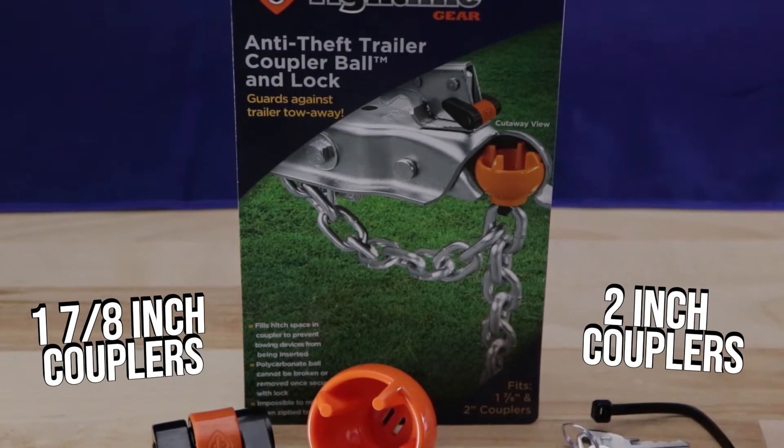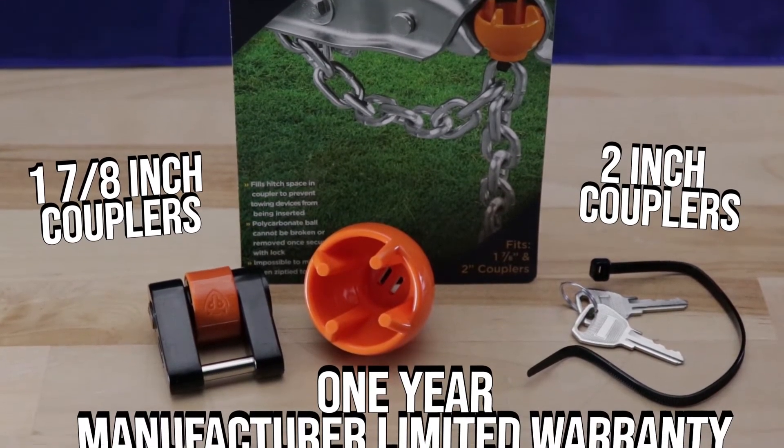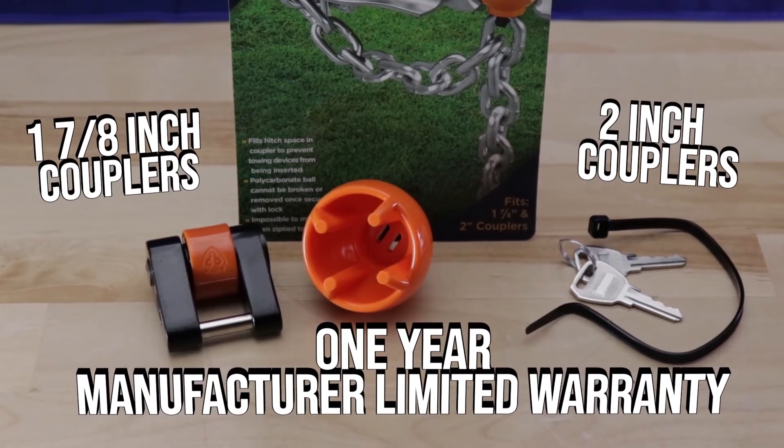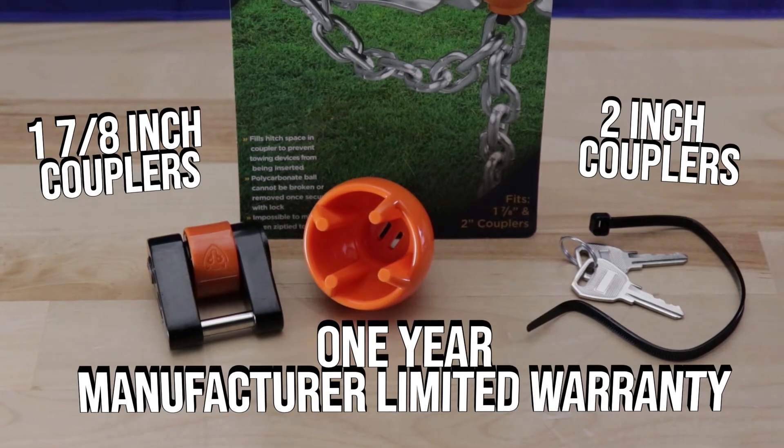The anti-theft coupler ball from Right Line Gear works with both 1-7/8 inch and 2 inch trailer couplers. It's also backed with a one-year manufacturer's limited warranty.